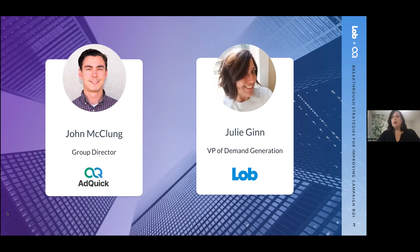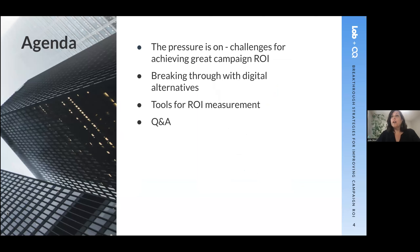All right, let's take a look at what we're going to be discussing today. Here's our agenda: we're going to cover some of the challenges we can all relate to when it comes to improving campaign ROI. Then we're going to talk about digital alternatives like intelligent direct mail and out-of-home advertising as a way of overcoming those challenges. And lastly, we're going to end with the importance of measurement to ensure you're getting the return you're expecting on all of those marketing dollars.